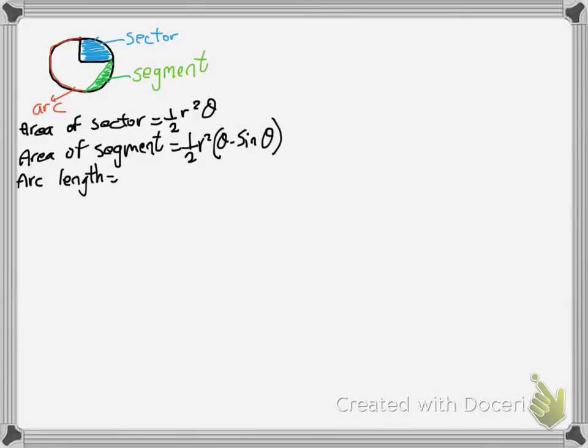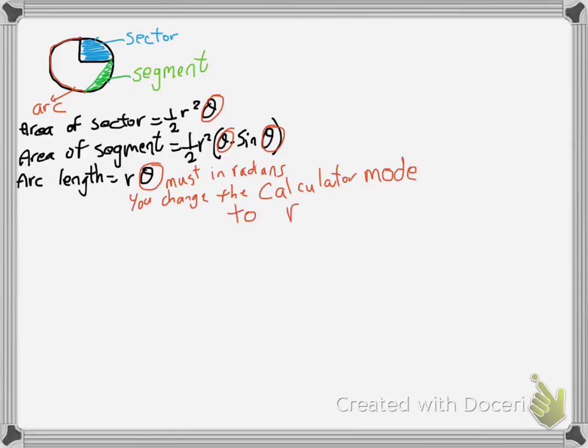Now it's very important to understand all these thetas or angles that we use must be in radians. So if it's been given in the question in degrees, you must change it to radians and you must change the calculator mode to radians. These two conditions are a must, otherwise you would have a wrong answer if you're trying to use degrees in those formulas.